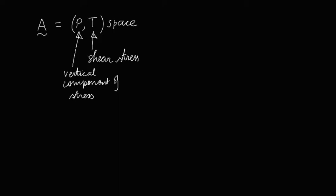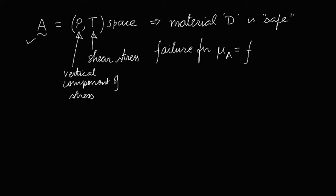So this fuzzy set A is to be the region in PT space for which material D is safe. Here we will be using a metric to decide the failure. The failure function is something like F of P square plus 4 T square under root.